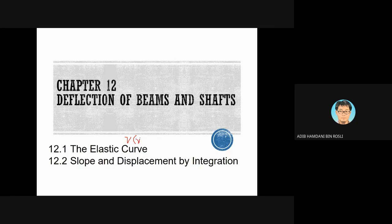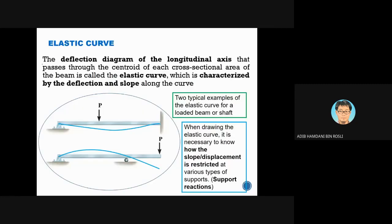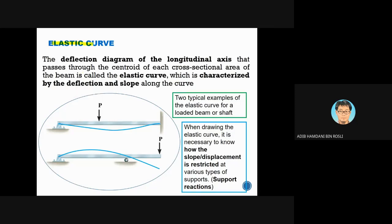The elastic curve is defined by v(x), while the slope θ equals dv/dx. There are three equations for section 12.2. Let's begin with the first one, which is the elastic curve.